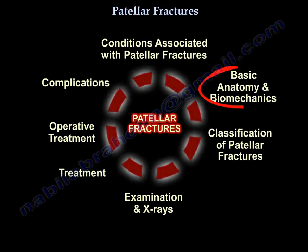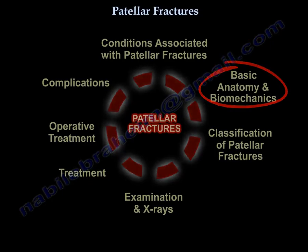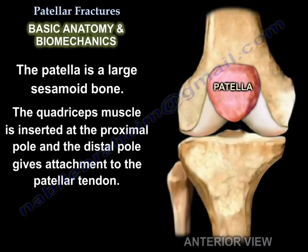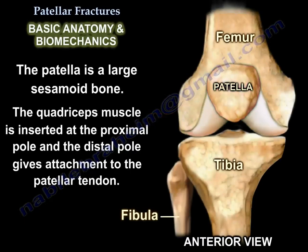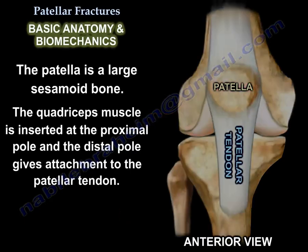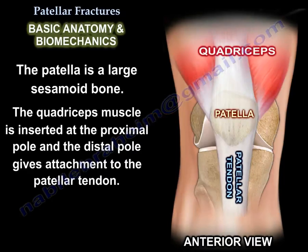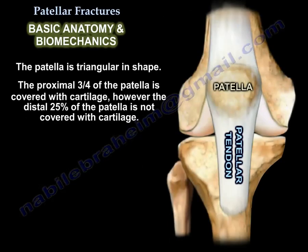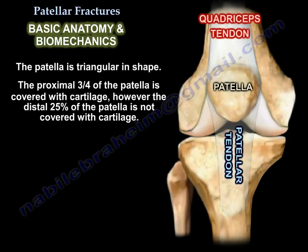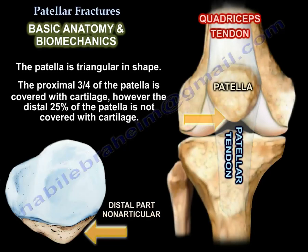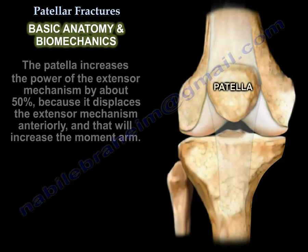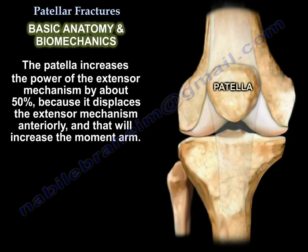Another area of interest is basic anatomy and biomechanics. The patella is a large sesamoid bone. The quadriceps is inserted at the proximal pole and the distal pole gives attachment to the patellar tendon. The patella is triangular in shape. The proximal three-fourths of the patella is covered with cartilage; however, the distal 25% is not. The patella increases the power of the extensor mechanism by about 50% because it displaces the extensor mechanism anteriorly, which increases the moment arm.